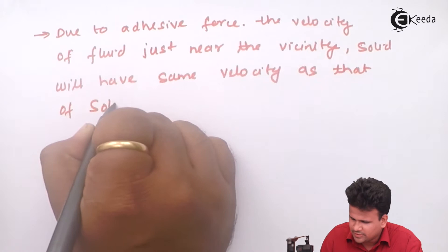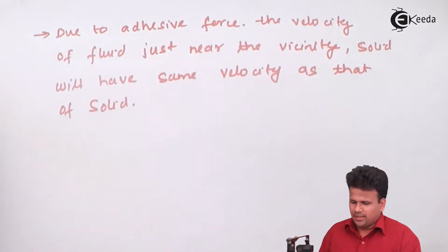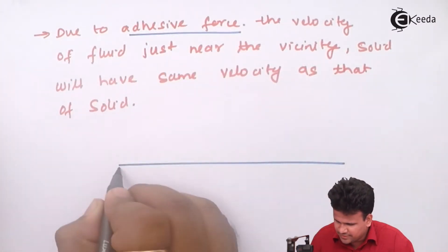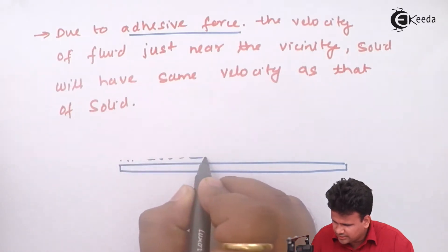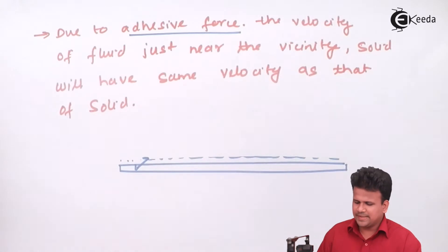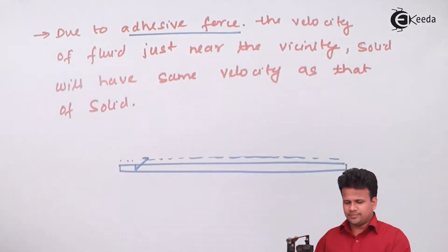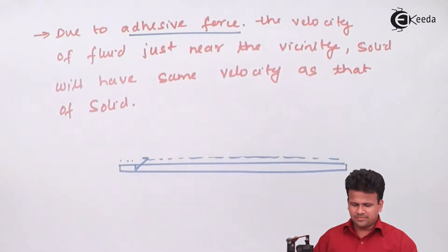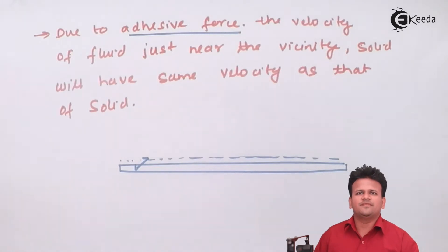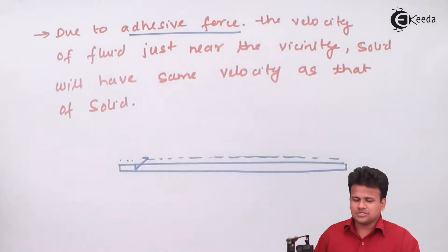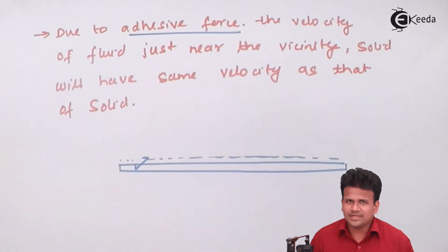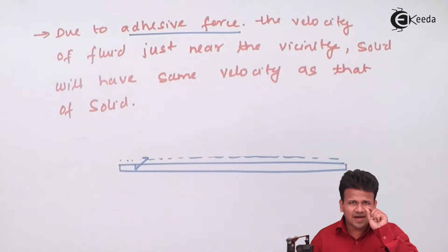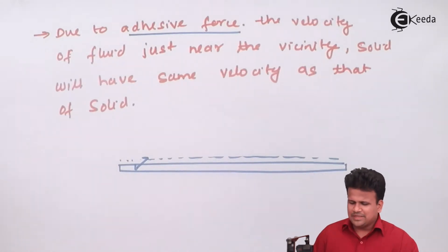This adhesive force is between the solid and a very minute layer of the fluid. If this adhesive force is very strong, this entire part will have zero velocity. A small thickness of the fluid will have a very minute velocity. Since we have considered the velocity of the solid to be zero, the velocity of the fluid for that small layer will also be zero.